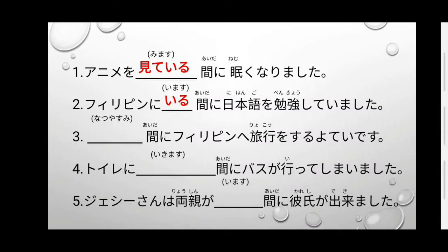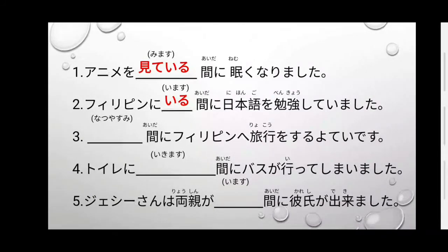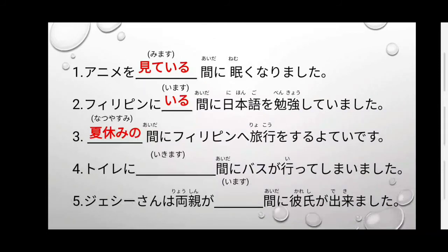Philippine is Philippines. Ryoko is to travel. Yotei is a plan. The noun we use is natsuyasumi. When placing a noun before aida ni, we add the particle 'no.' So: Natsuyasumi no aida ni, Philippine Ryoko o suru yotei desu. In English: During summer break, he plans to travel in the Philippines.